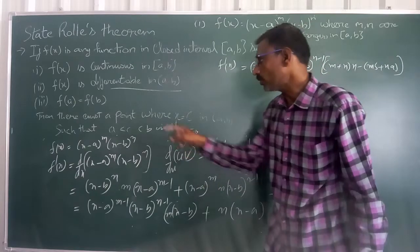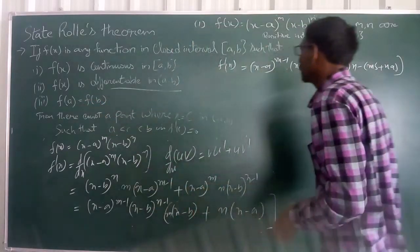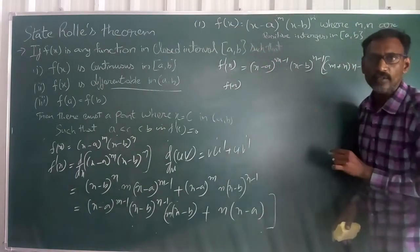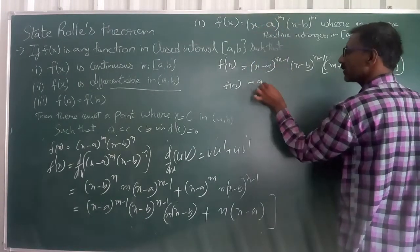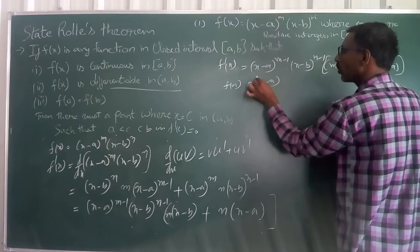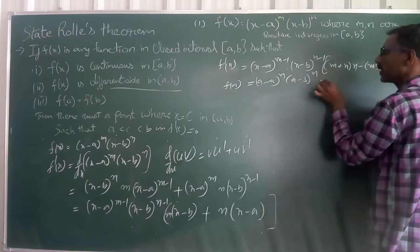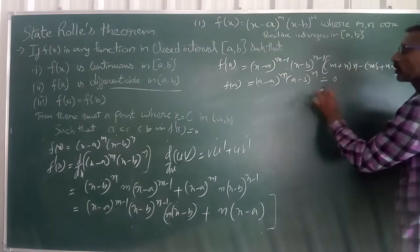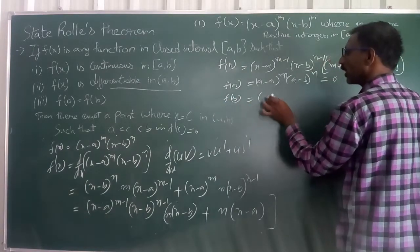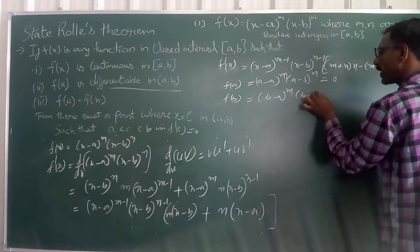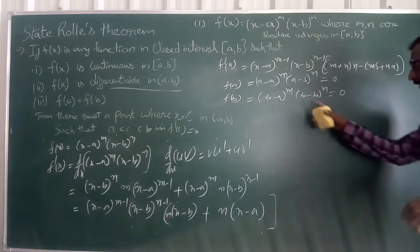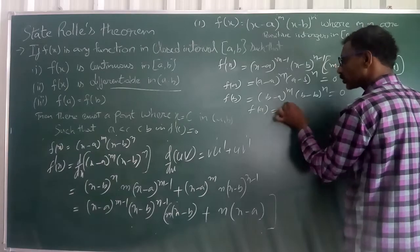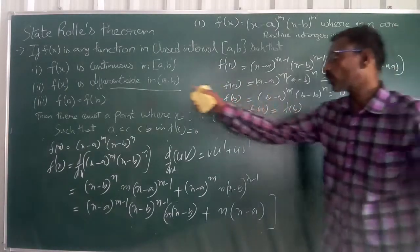Now we check f(a) = f(b). Taking f(a): substituting x = a, we get (a - a)^m · (a - b)^n = 0, since (a - a) = 0. Similarly, f(b) = (b - a)^m · (b - b)^n = 0, since (b - b) = 0. Therefore f(a) = f(b) = 0. This condition is verified.